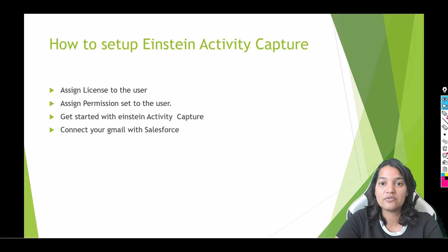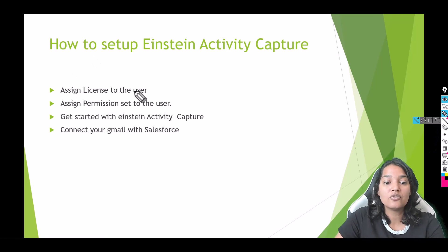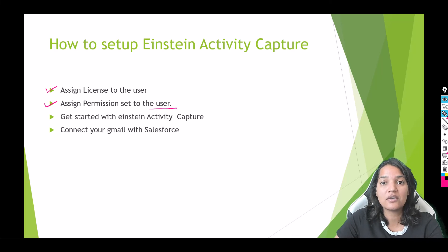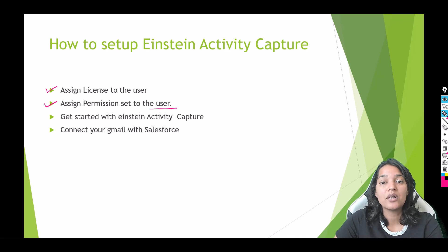Now, how do we set up Einstein Activity Capture? There are certain steps involved. First, you have to assign an Activity Capture license to that particular user. Second, you have to assign a permission set — specifically the standard Einstein Activity Capture permission set — to the user. Third, you can set up Einstein Activity Capture and connect your Gmail or Outlook within Salesforce.